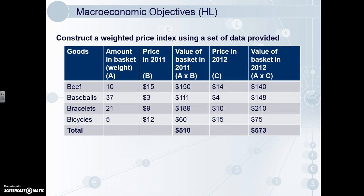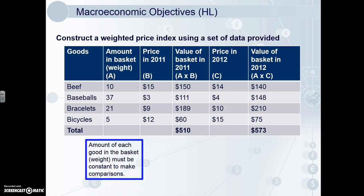Now we're looking at constructing a weighted price index using a set of data. This is essentially how CPI, the consumer price index, is derived. For this course we keep it much simpler — we don't look at every item bought in an economy. We'll assume this economy has just four goods: beef, baseballs, bracelets, and bicycles. The first column shows the amount of each good included in the basket of goods — what the average household buys. For example, the average household buys 21 bracelets. This is the weighting. Price indices aim to be as accurate as possible to match actual consumption habits, and these weightings must be kept constant to make comparisons.